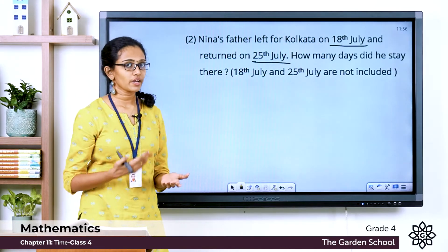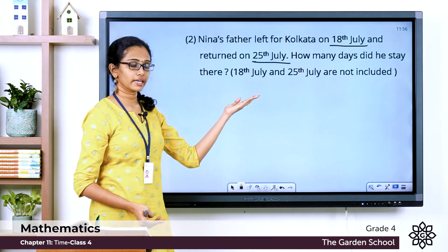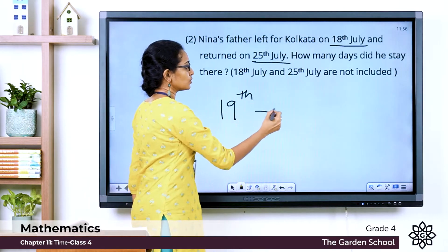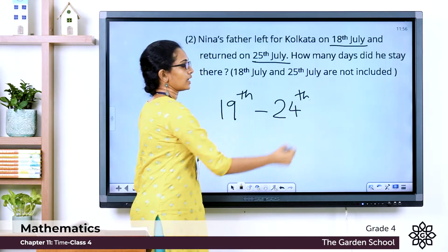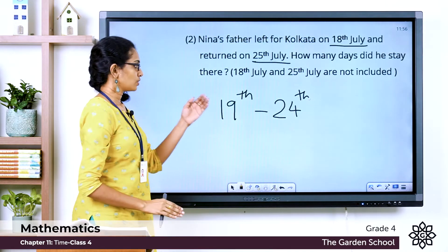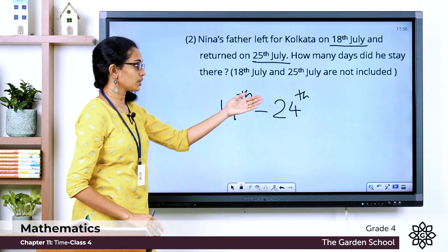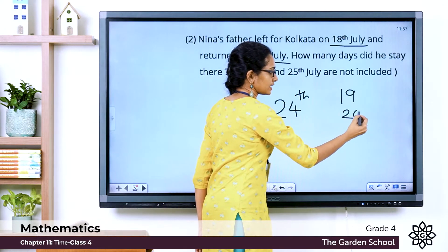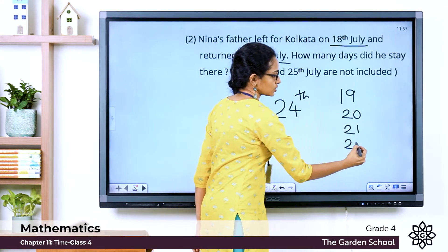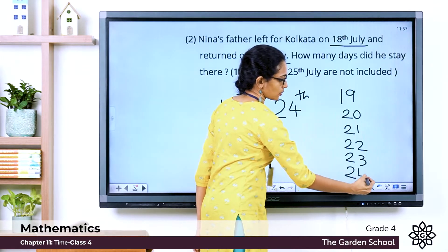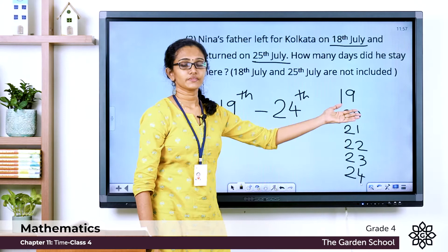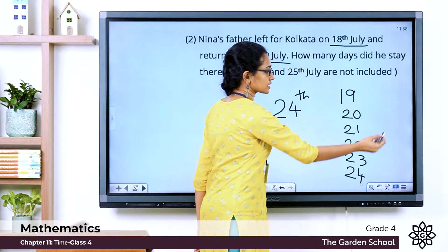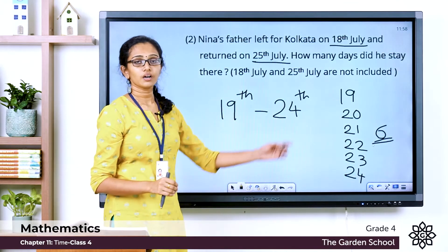Since we exclude those two days, he must have stayed from the 19th of July to the 24th of July. So he was there on the 19th, 20th, 21st, 22nd, 23rd and 24th of July. Counting those days: 1, 2, 3, 4, 5, 6 — he stayed in Kolkata for six days.